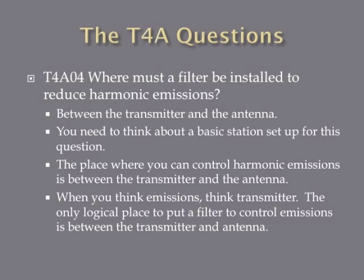Where must a filter be installed to reduce harmonic emissions? The answer is between the transmitter and the antenna. To get this question right, think of a basic station setup. When you think of emissions, you have to think of what's being transmitted. The only place to catch things being transmitted is between the transmitter and the antenna — before that, the emission isn't produced yet, and after the antenna it's already in the atmosphere.